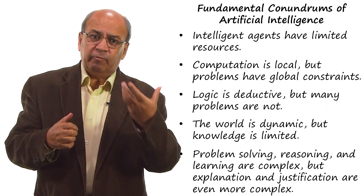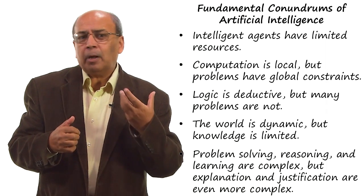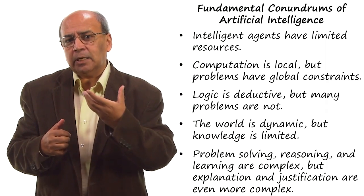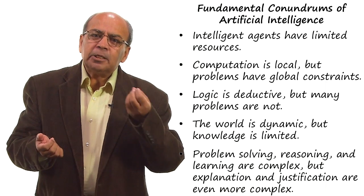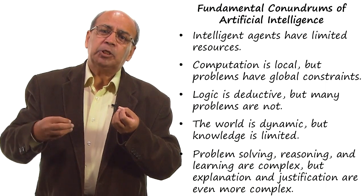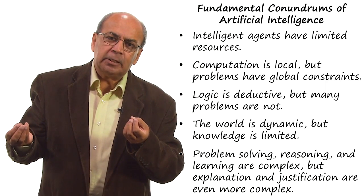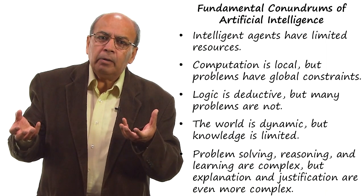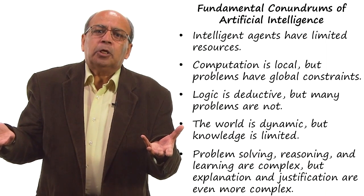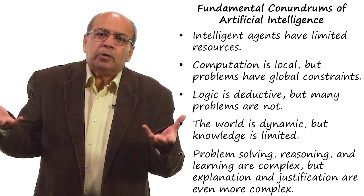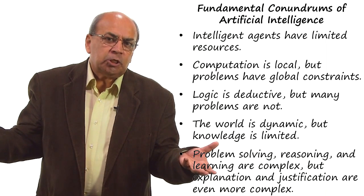Conundrum number five: problem solving, reasoning, and learning are complex enough, but explanation and justification add to the complexity. How then can we get an AI agent to ever explain or justify its decisions?